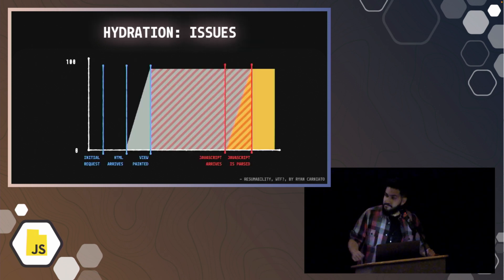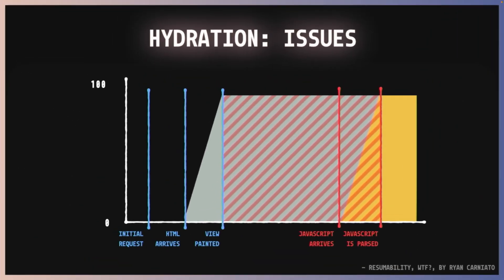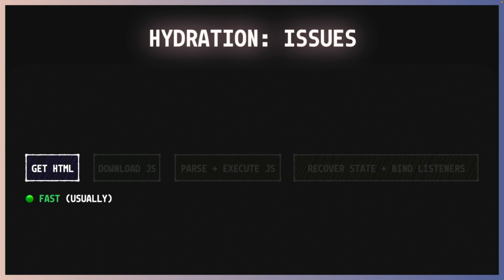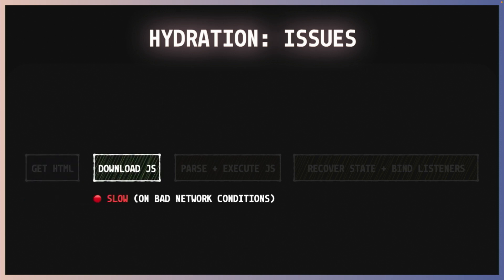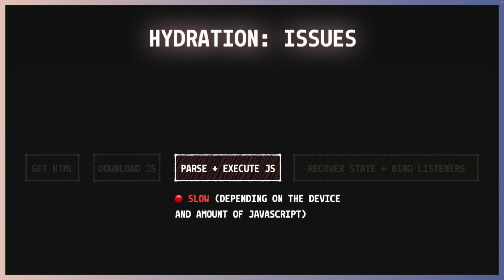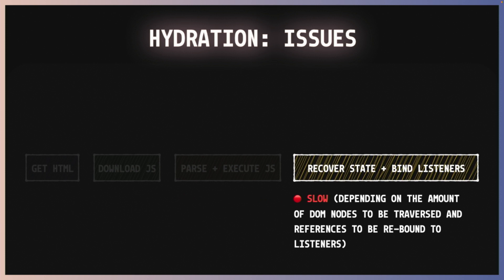Hydration also comes with a few issues. This is probably the most famous one, called the uncanny valley. It happens after you have your initial request — you get the HTML and the view is painted. But then you have to wait for JavaScript to get to the browser, and also to be executed, parsed, and et cetera. So users, they see the server-side rendered app, but they just cannot interact with it. If we break down each of those steps, the first part of getting HTML is usually fast. But then you need to download JavaScript, and that can be slow depending on the network conditions of your users. Then you have to parse and execute JavaScript — again, this can be slow depending on the amount of JavaScript you're shipping and also depending on the device capabilities they have, like low-end devices. And then you have to recover state and bind those event listeners, which can be slow depending on how many DOM elements you have to go through and how many references you need to bind to those listeners.